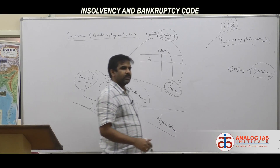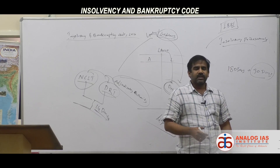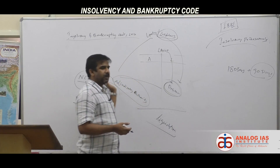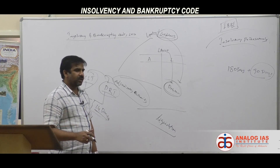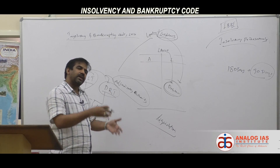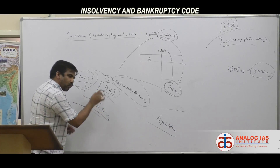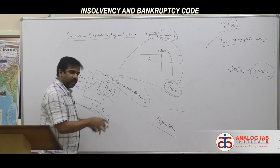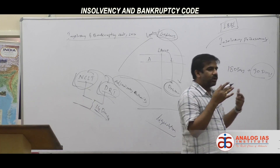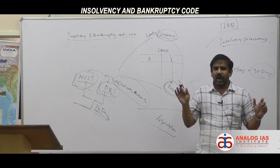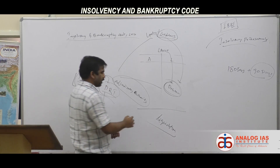After 180 or up to 270 days, NCLT or DRT puts forward a plan. For instance, if SBI lent money to a company, NCLT might suggest that 20% of the loan cannot be repaid, but the remaining 80% will be recovered through acquisition by another company like Ratan Tata's. Any such solution goes to implementation only with the consent of majority stakeholders. If no acceptable solution is reached within the stipulated time, the ultimate outcome is liquidation.